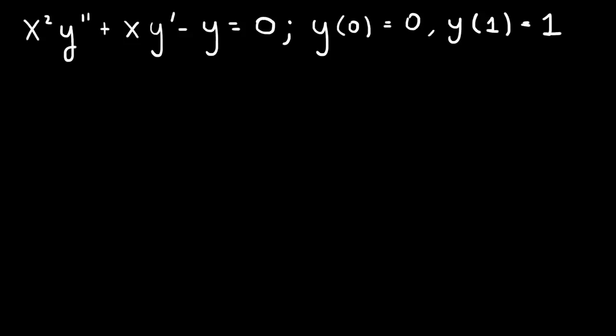Here let's solve a Cauchy-Euler equation: x squared y double prime plus xy prime minus y equals 0, with two point boundary conditions y of 0 equals 0 and y of 1 equals 1.